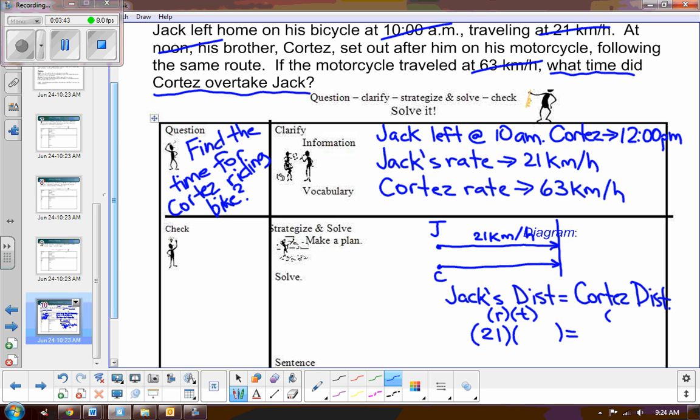Now Cortez, remember, it's rate times time. What do we know about Cortez's rate? It was 63 kilometers per hour. And what do we know about his time? Well, he left at noon. So time is going to be our unknown.